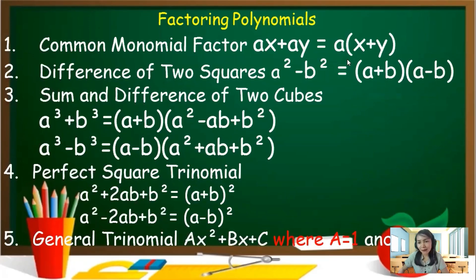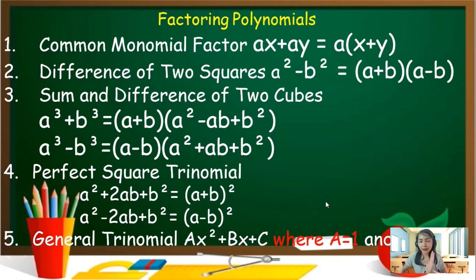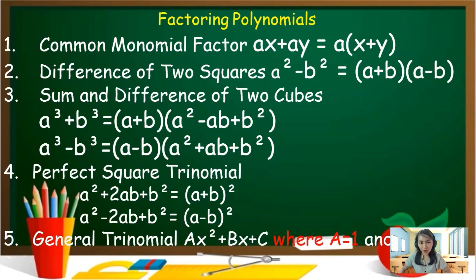Now let us have our recall about factoring polynomials. If you didn't remember how to factor polynomials using CMF, DTS, SDTC, PST, GT, A equals 1, and A greater than 1, I have recorded discussions in my YouTube channel you can check to recall or master how to factor polynomials. Common monomial factor can be used for 2 or more terms. Difference of 2 squares for binomials only, SDTC for binomials, PST for trinomials, and GT is for trinomials also.